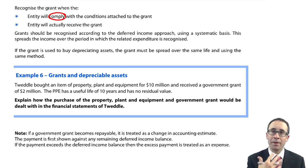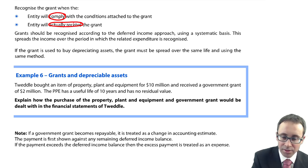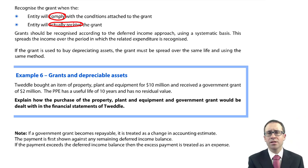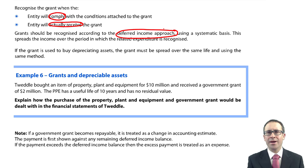So it's all about the compliance with the conditions attached to the grant and that you will actually receive it. So there has to be virtual certainty about the fact that you are going to receive that cash. Once you've got that, then the likelihood is that you are going to use the deferred income approach. So you debit the bank and credit deferred income as a liability.